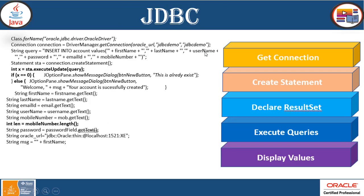Now the next step is the JDBC connection. JDBC works on these five steps. First we need to get the connection. Then we create the statement. And then declare the result set, execute the queries, and display the values. Out of these five steps, we need to get the connection here. To get the connection, there are two steps we need. First, we load the driver with the help of Class.forName. Here we are going to give the Oracle driver name. Once the loading is done, next we need to get the connection.